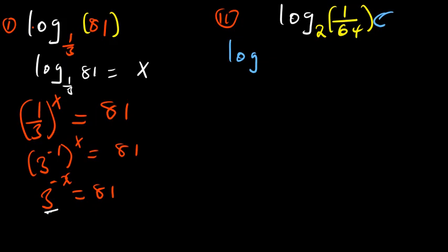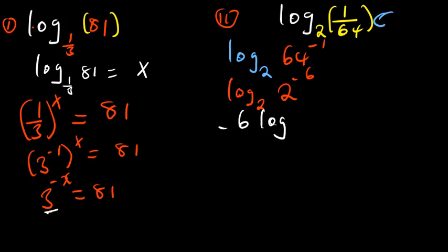Log base 2 — we know that 1 over something can be written as 64 raised to the power negative 1. 64 is the same as 2 raised to the power 6, so that gives us 2 to the power negative 6. The property of log allows us to shift the power to become in front — that becomes negative 6 times log base 2 of 2. Log of base itself is 1, so this gives 1. The answer becomes negative 6.